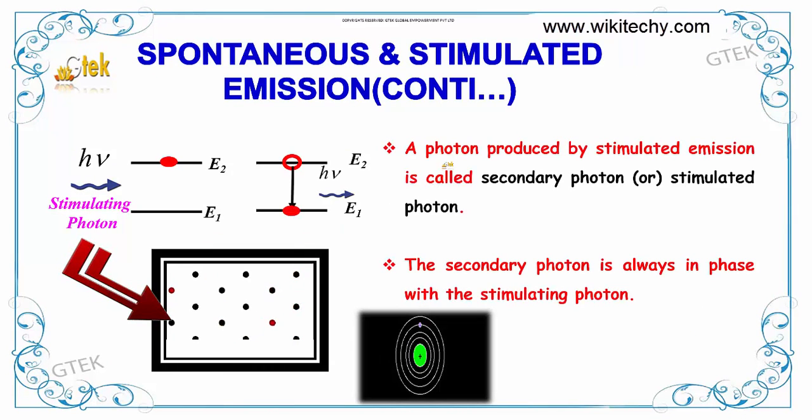We are able to see the stimulated emission here. A photon produced by stimulated emission is called a secondary photon or stimulated photon. The secondary photon is always in phase with the stimulating photon, which brings the atoms from top to bottom.